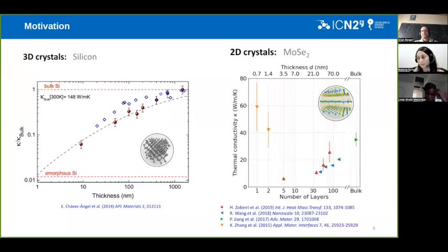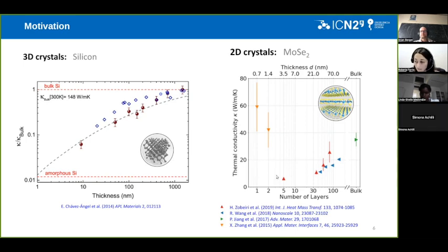While when we talk about transition metal chalcogenides, in this case, in particular, we decided to study and focus the attention only on molybdenum diselenide as a representative for the whole family, we see that there is no agreement in the literature. Here, I report some of the main results for the thermal conductivity in the in-plane direction as a function of thickness. You can see there are different studies that predict values that range from 60 watt per meter per Kelvin down to less than 10 watt per meter per Kelvin.